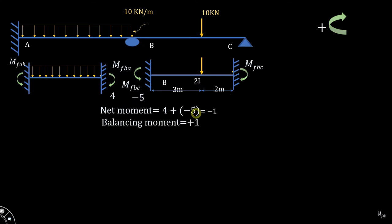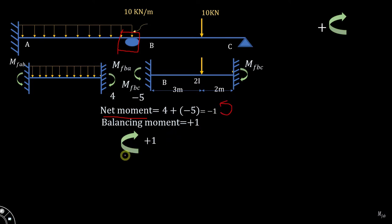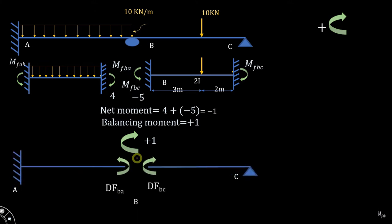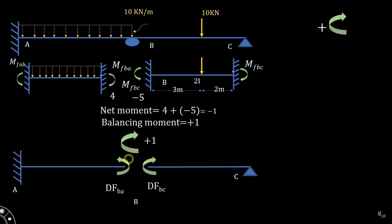We need to balance it to get the net moment at joint B equal to zero. To do that, we apply a balancing moment which is equal in magnitude to the net moment but opposite in direction. Since the net moment was acting in the counterclockwise direction, we apply a balancing moment acting in the clockwise direction with the same magnitude. After that, we distribute this balancing moment towards the left as well as the right of joint B using the concept of the distribution factor.